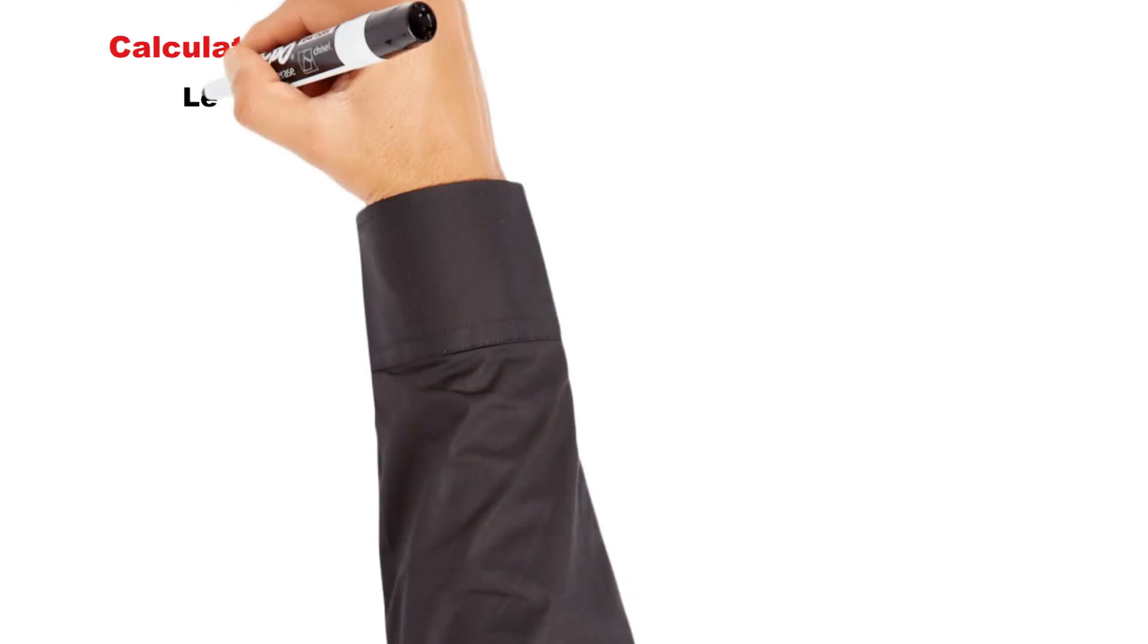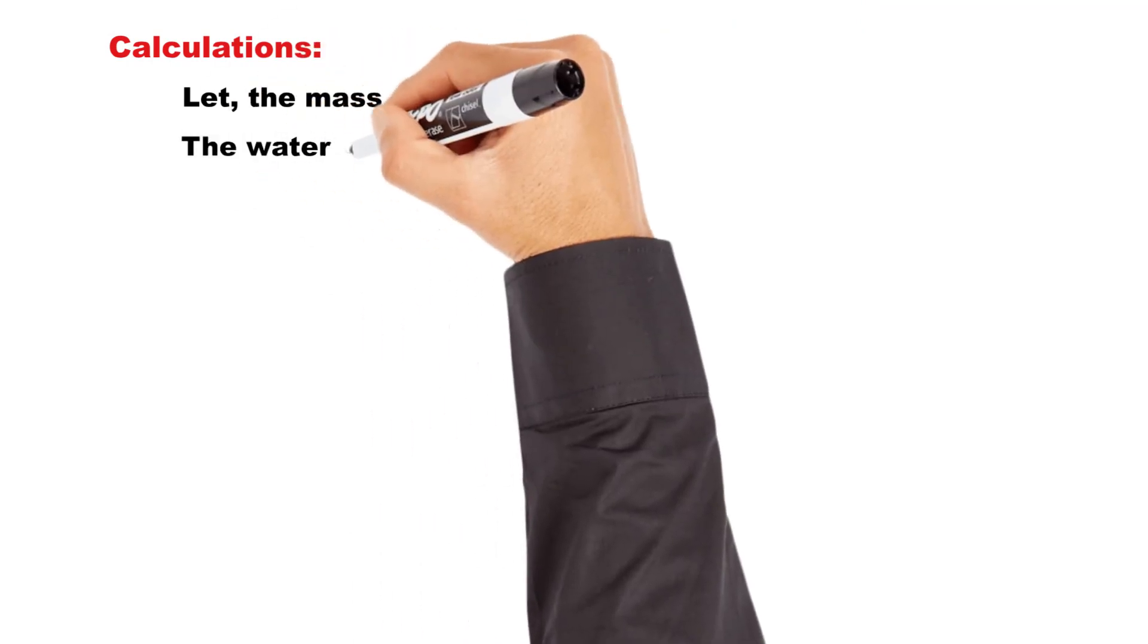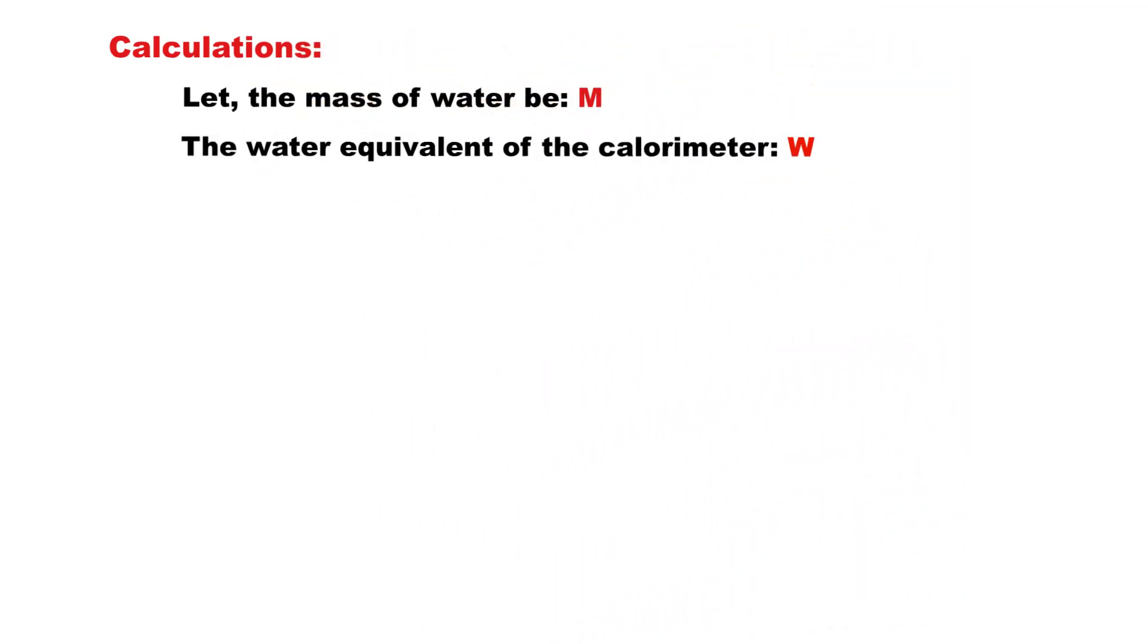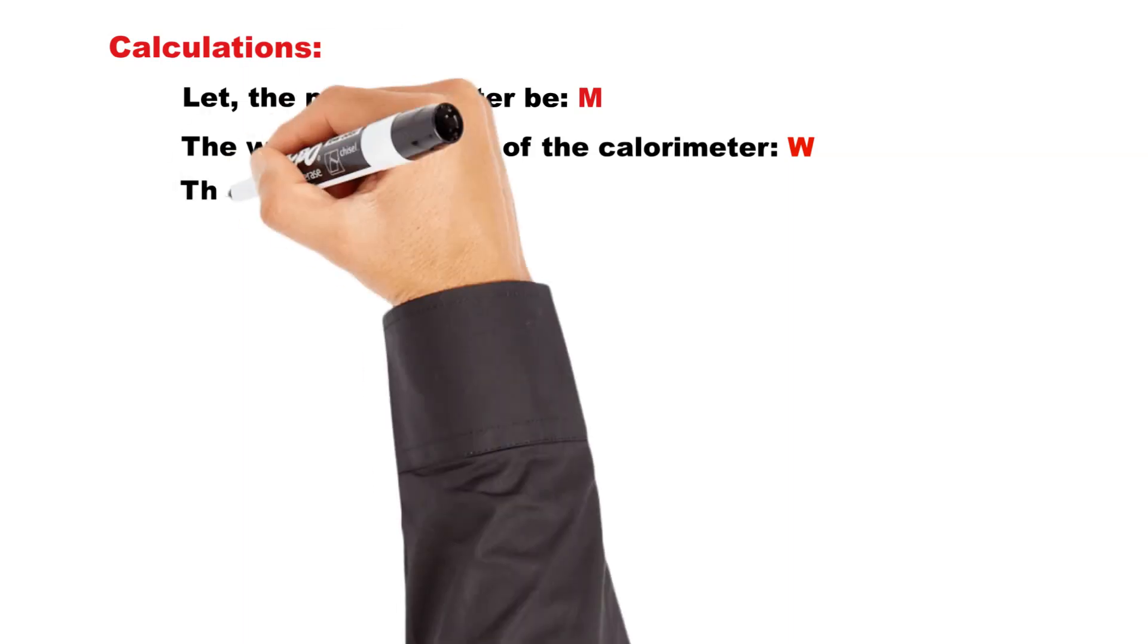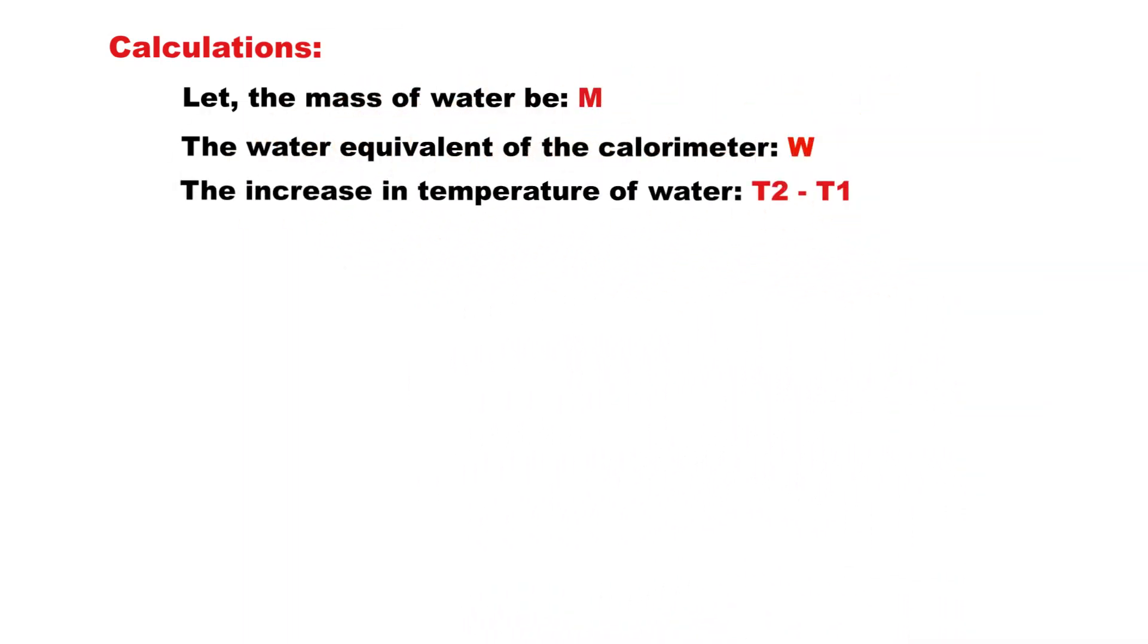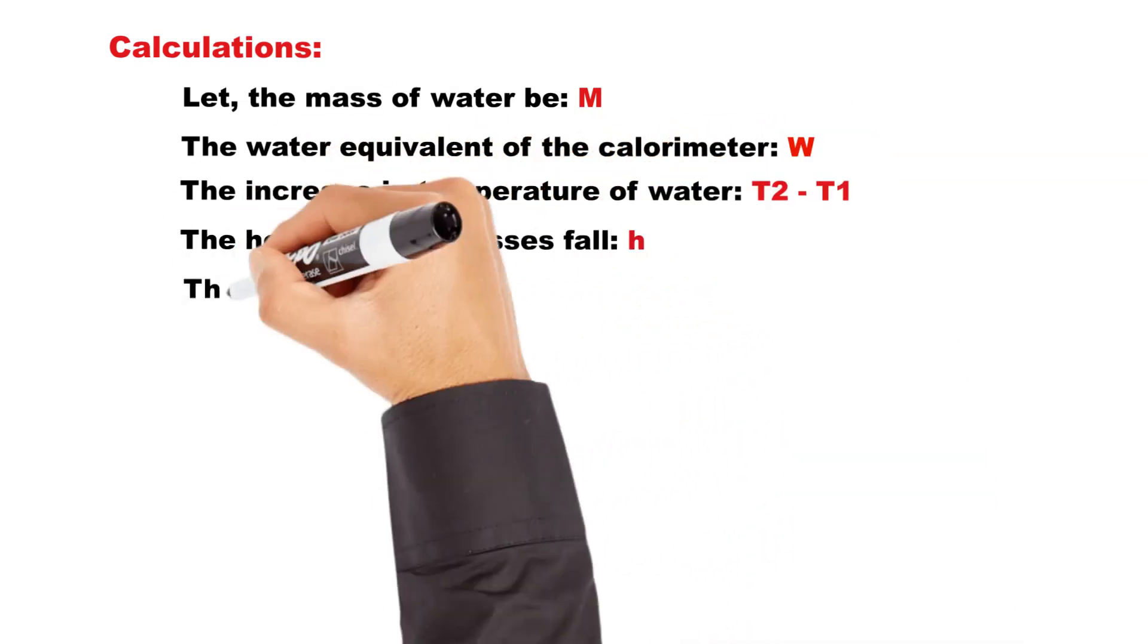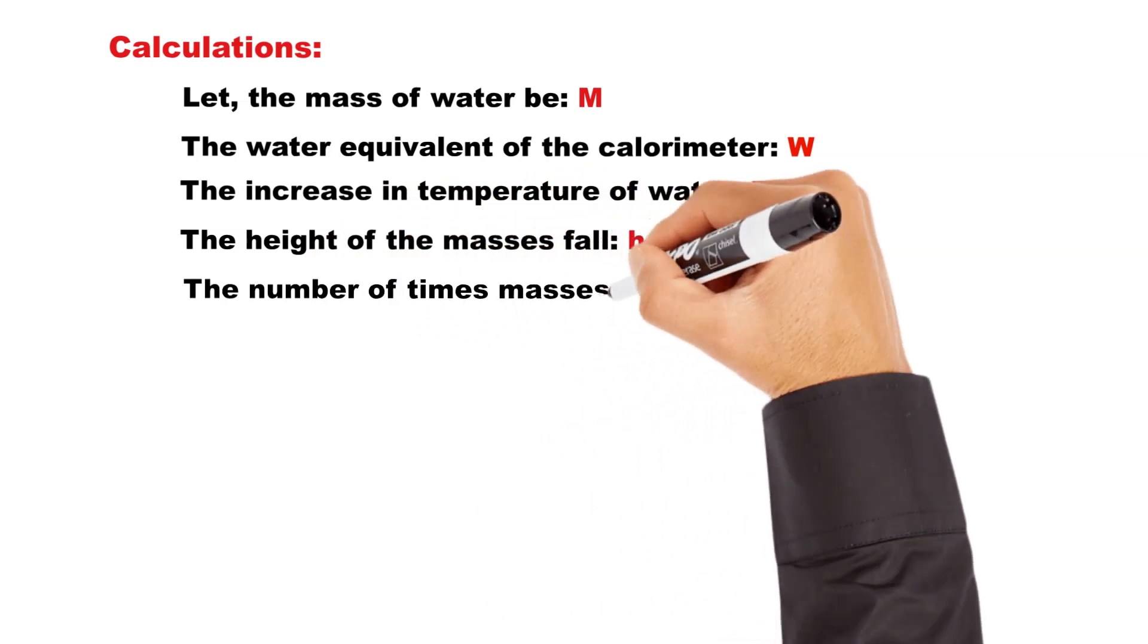Here is the calculation of the value of J. Let the mass of water be M. The water equivalent of the calorimeter is W. The increase in temperature of water is T2 minus T1. The height the masses fall is H. The number of times the masses fall is N.